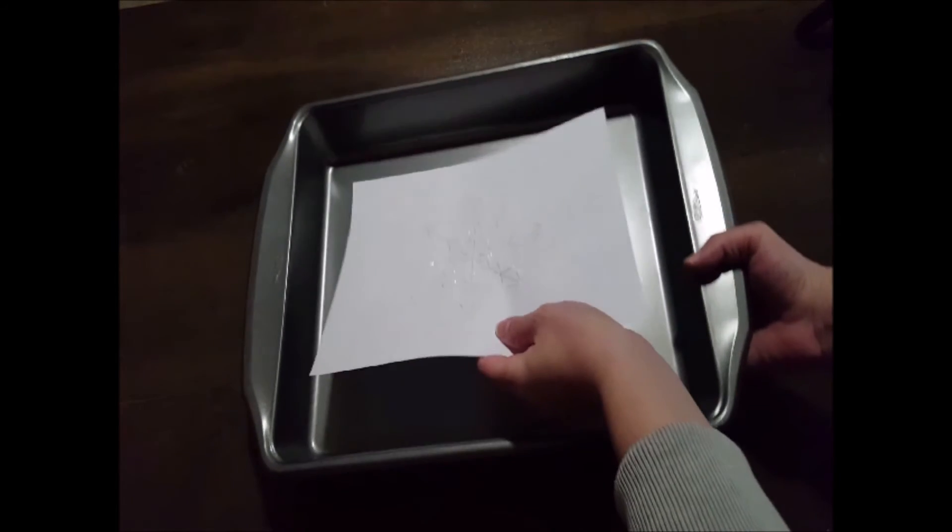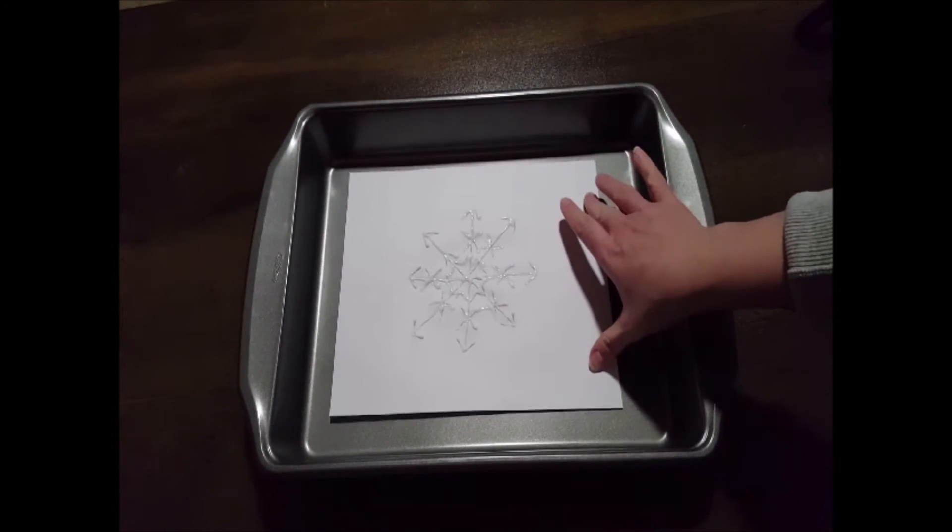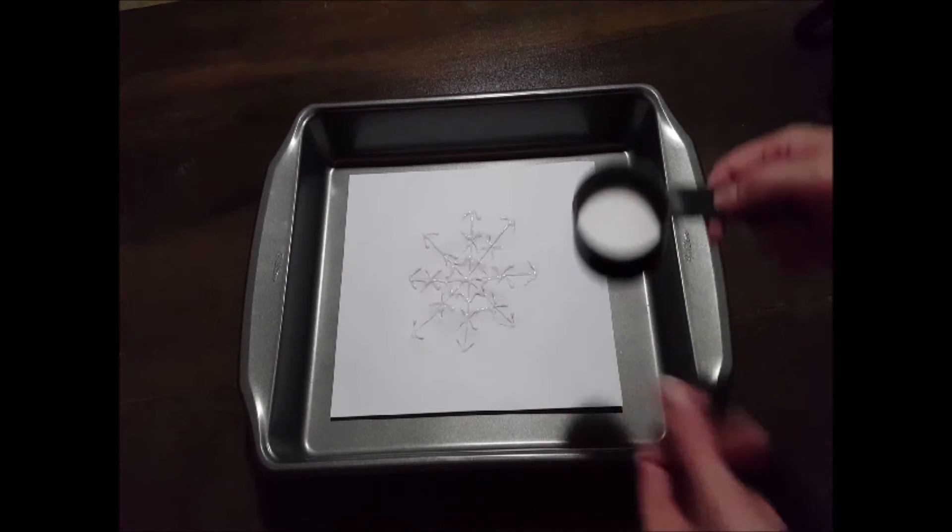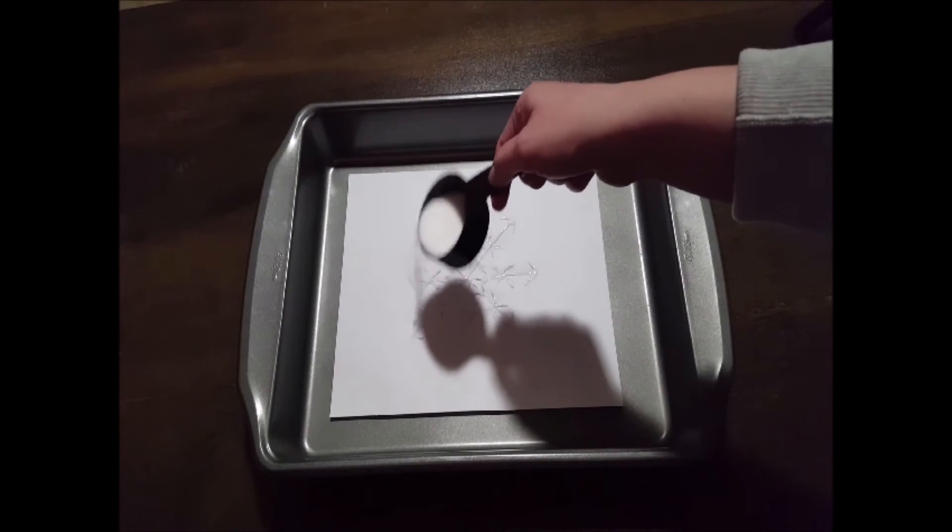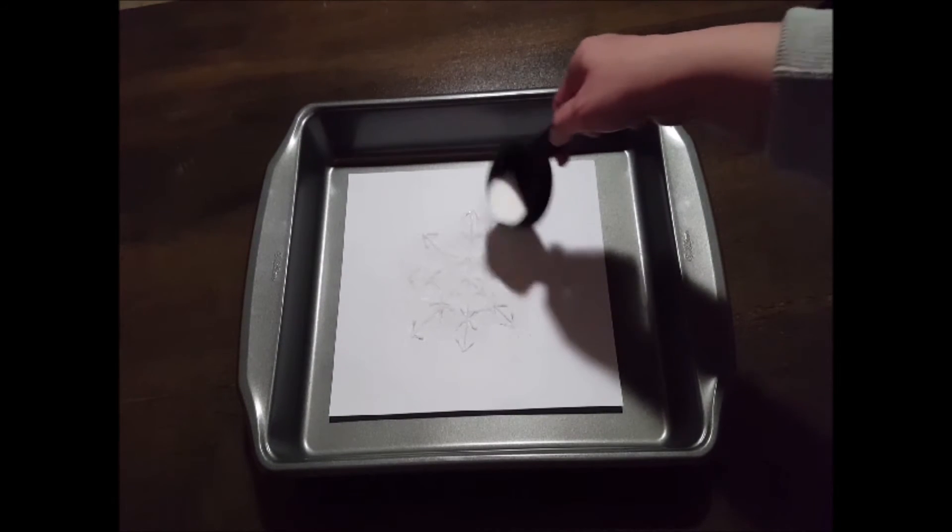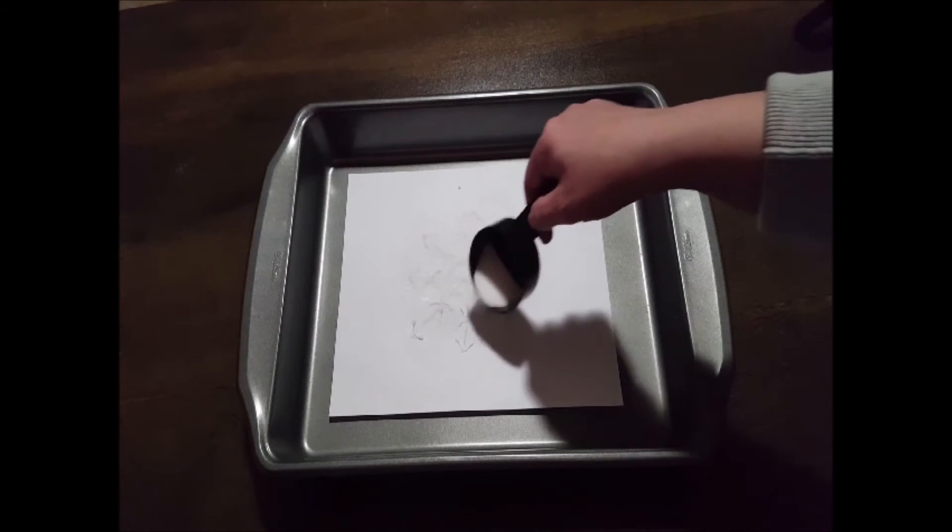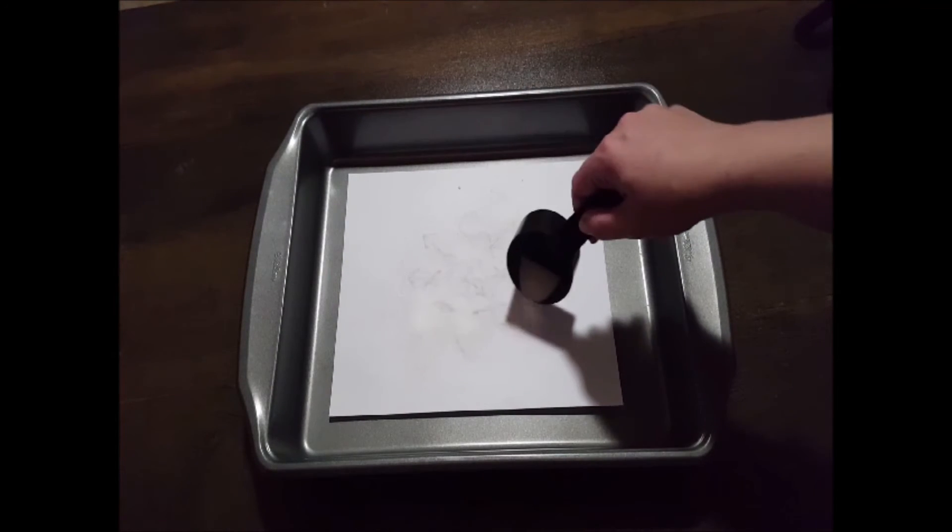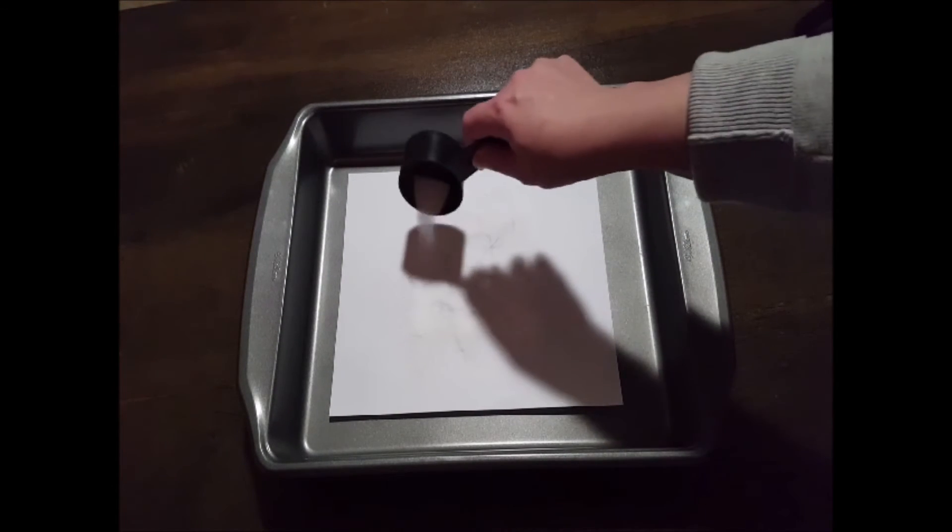To save on mess and cleanup I'm going to place my sheet of paper inside of a high-sided pan. We're now going to sprinkle salt across the entirety of our freshly glued snowflake pattern. The salt will adhere to the glue and we will have a crystallized look to our snowflake when this is finished. Cover your snowflake completely and make sure all the glue is covered with salt.